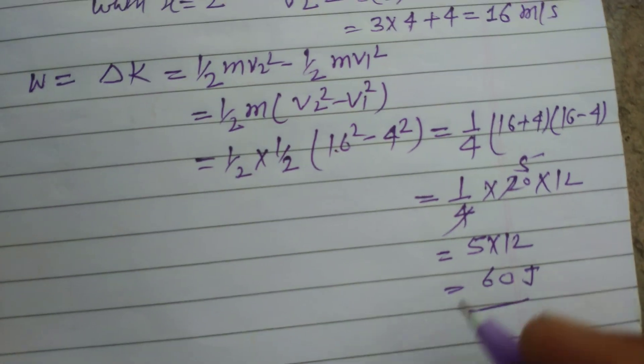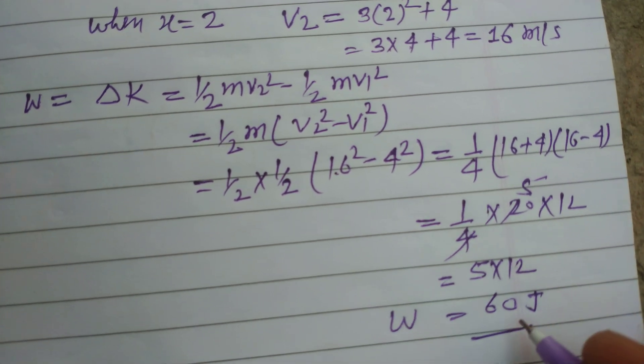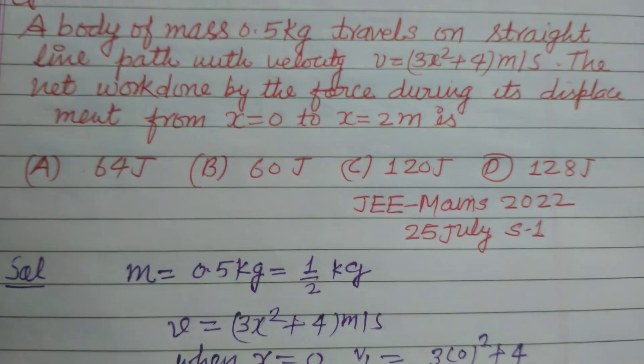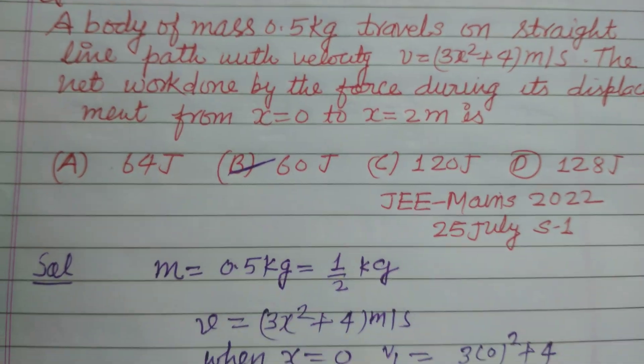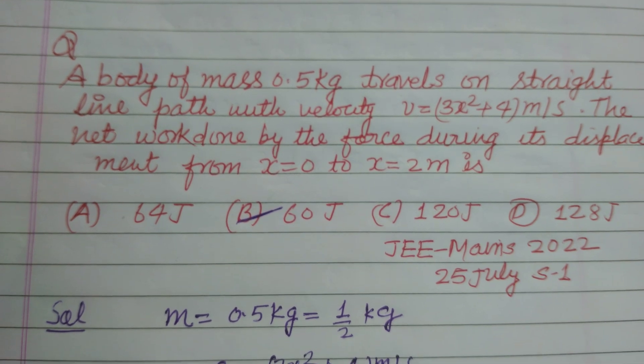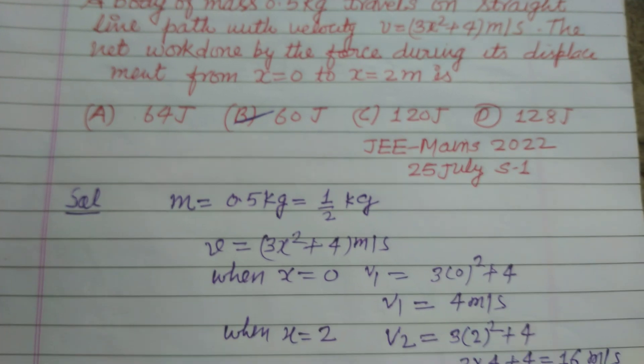So kinetic energy, change in kinetic energy is work done. So W equal to 60 joules. So students, in this way we got the answer of this question which is found in option B, 60 joules. By using work energy theorem that work done equal to change in kinetic energy, we solve this problem.